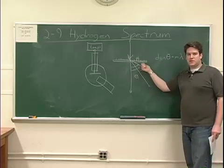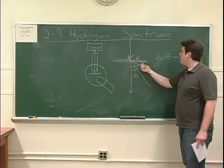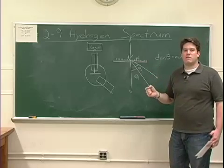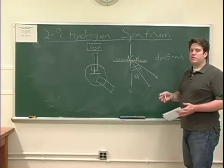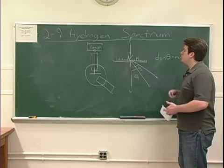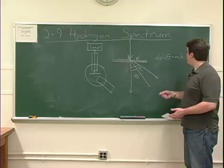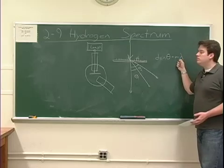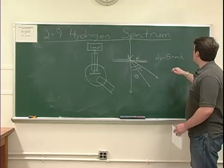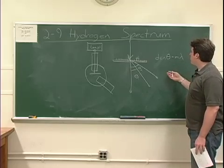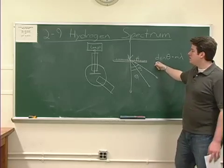Now the manufacturer gives a number for d, but we're not necessarily going to trust the manufacturer. There are variations in the different diffraction gratings in this room, so you're going to use a helium lamp with a known value of lambda to get a good value for d. Then we're going to use that value of d and use it to study hydrogen.